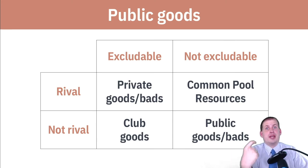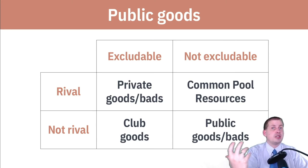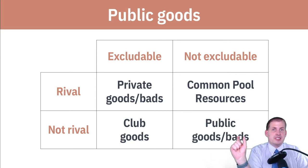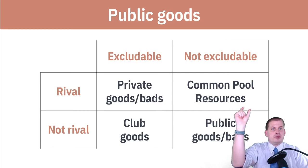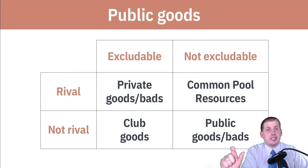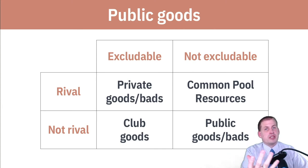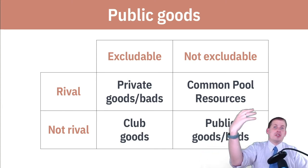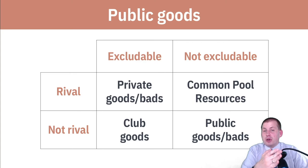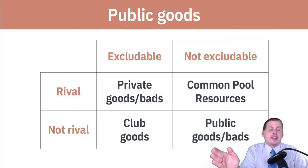If you want to argue that housing is a human right and should be treated as a public good, that's a valid argument from a social justice perspective. Similarly, healthcare is not a public good by this definition — you can exclude people from it, and it is rival: showing up at a doctor's office takes away someone else's slot. But from a human rights or social justice framework, there are valid arguments for treating these as public goods.